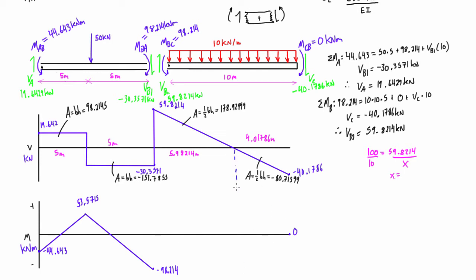Here we have a positive area so we increase with a parabolic shape: negative 98.214 plus 178.92999 brings us up to 80.71599. That's a nice parabolic curve. Then we subtract the final area: 80.71599 minus 80.71599 brings us right down to zero — exactly what we expected. That confirms we've done this correctly.